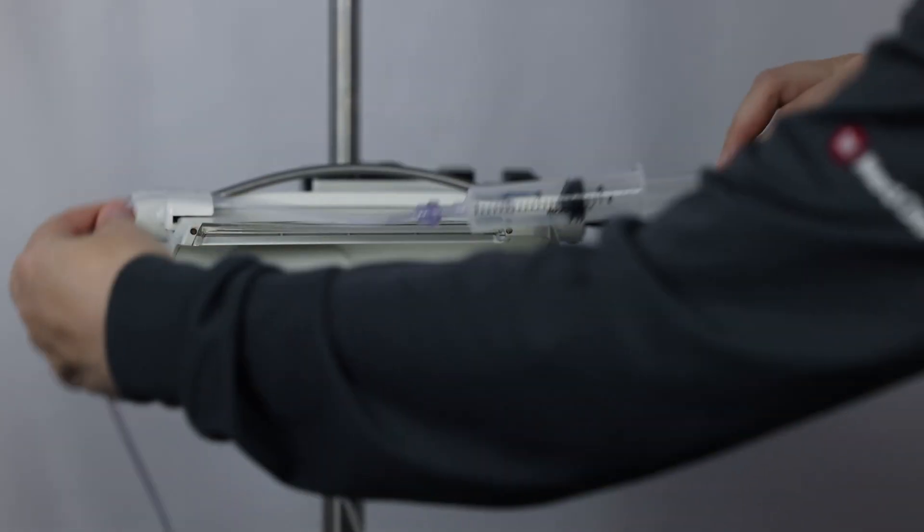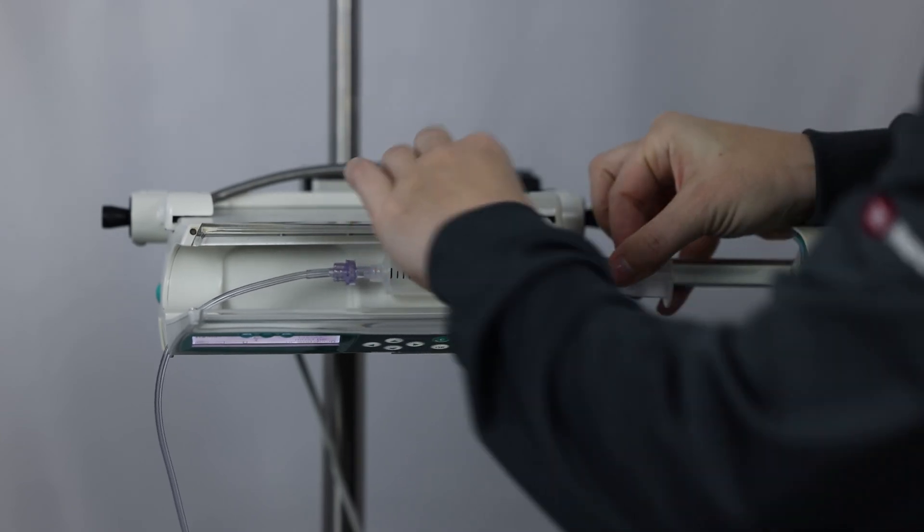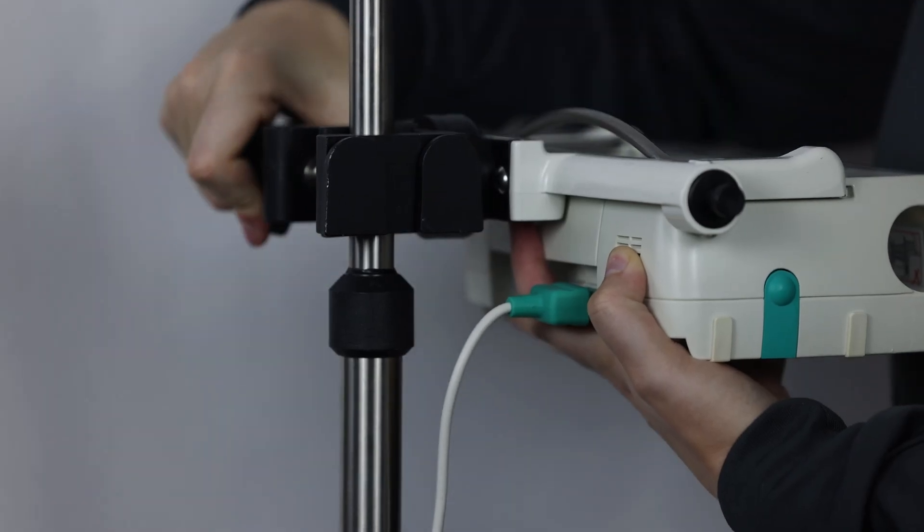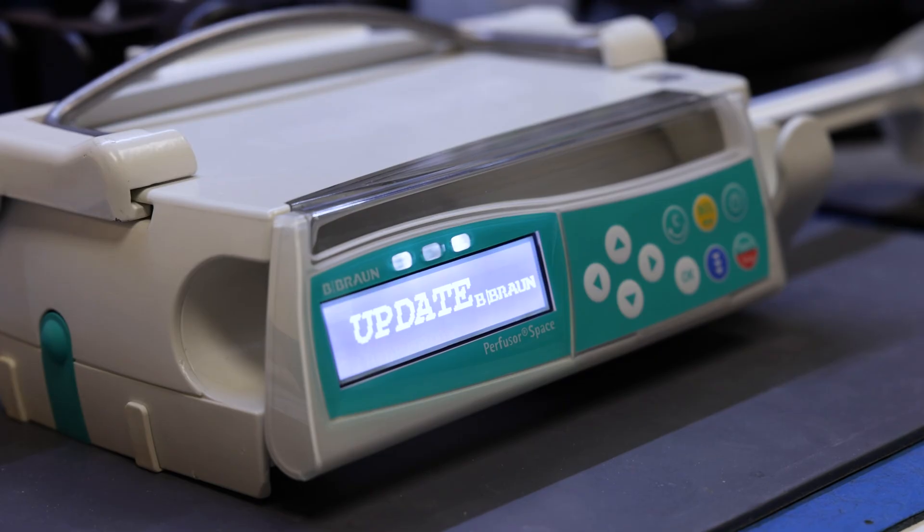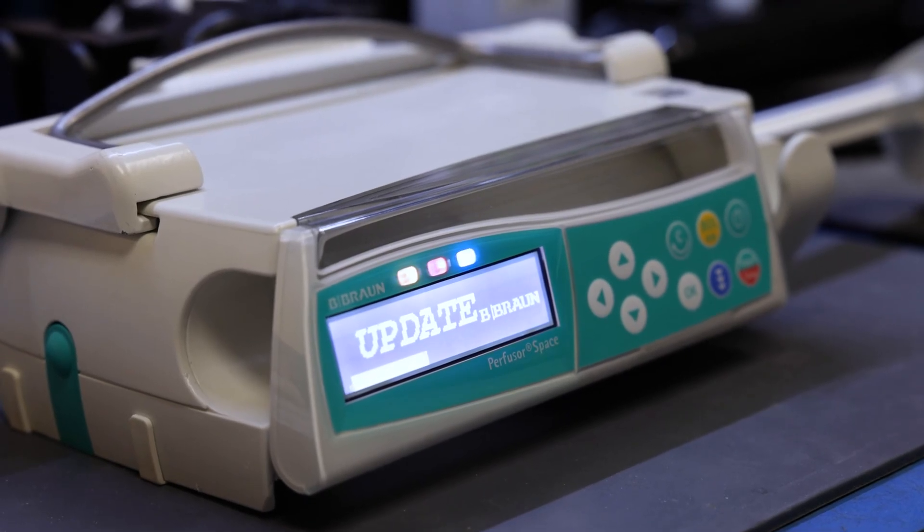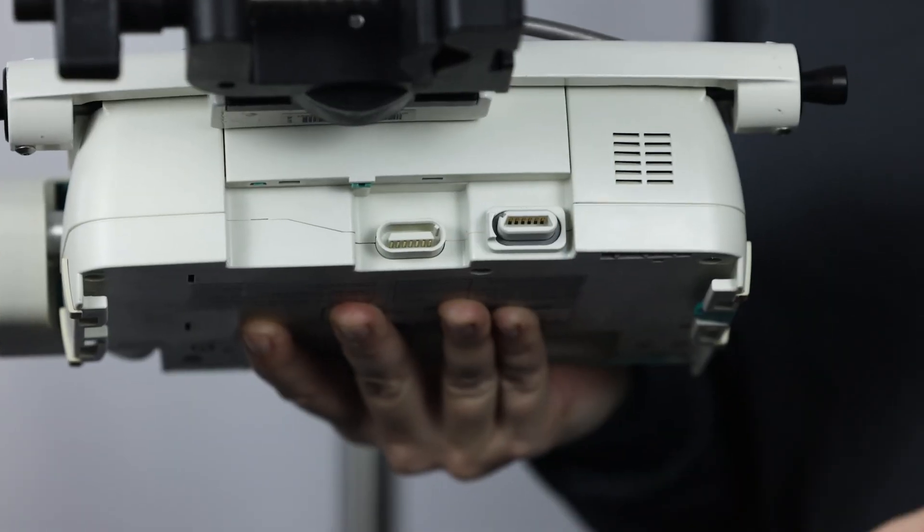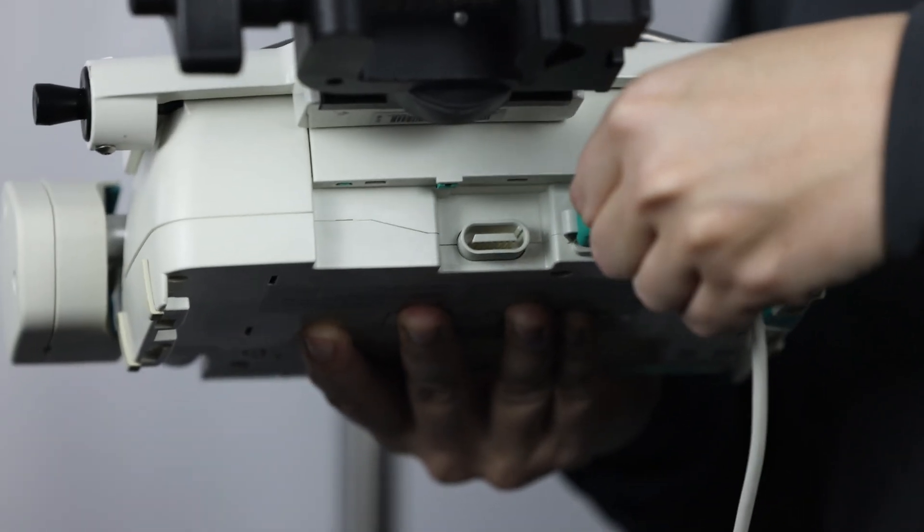One of the smaller syringe pumps on the market, the Perfuser Space only weighs 3 pounds. The pump can be attached to an IV pole with the adjustable clamp, and up to 3 pumps can be stacked together. The bright screen and arrow keys allow for accurate programming. The internal backup battery on the B. Braun Perfuser Space can last up to 8 hours.